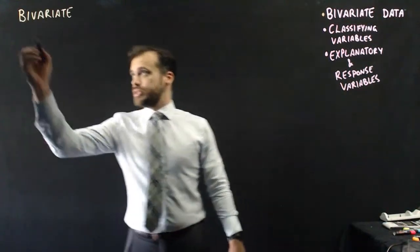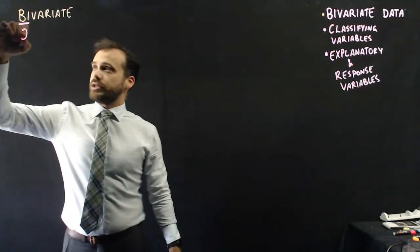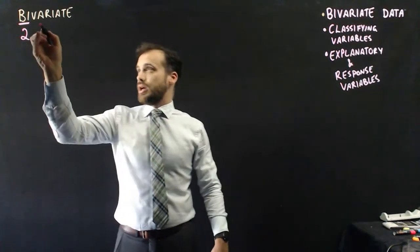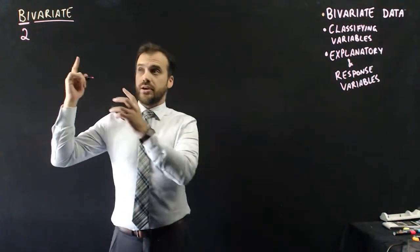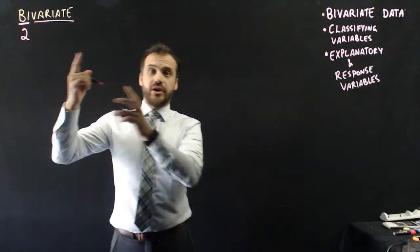Well, we can define the word using two parts of it. Bi, like two - bicycle, bisexual - and variate, like variable. So really it just says bivariate data is two variable data.